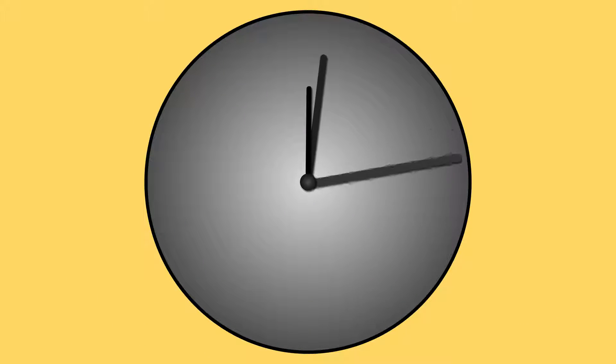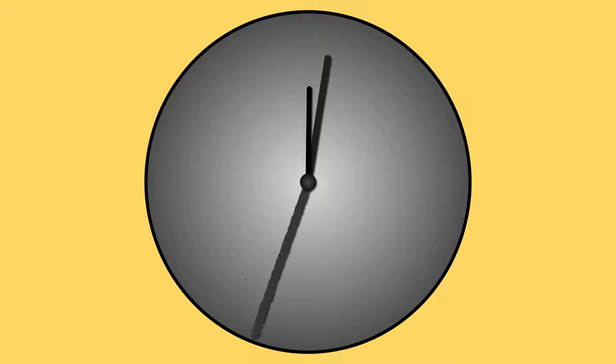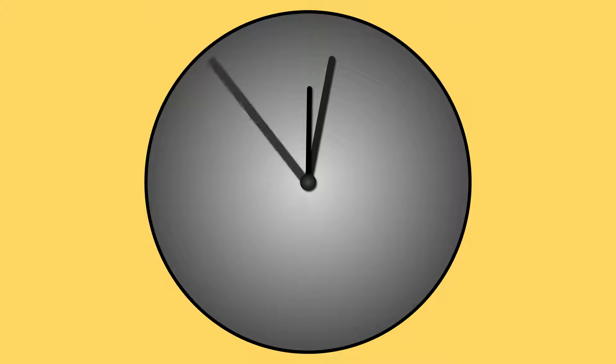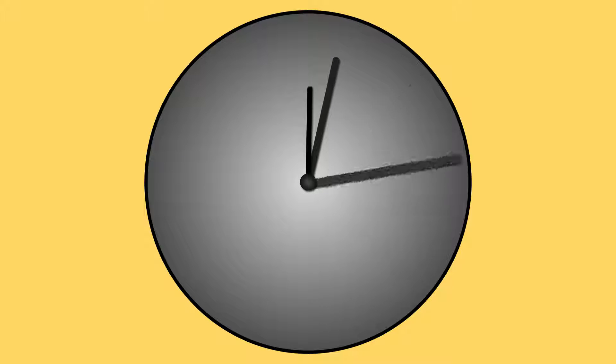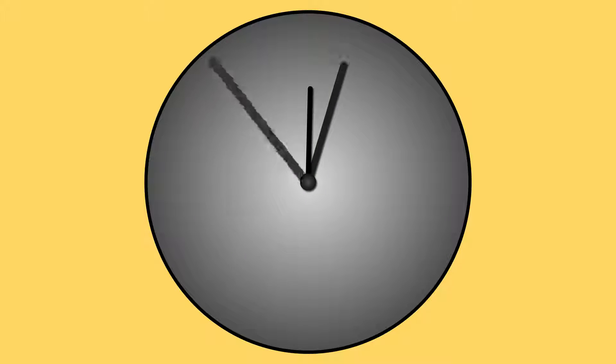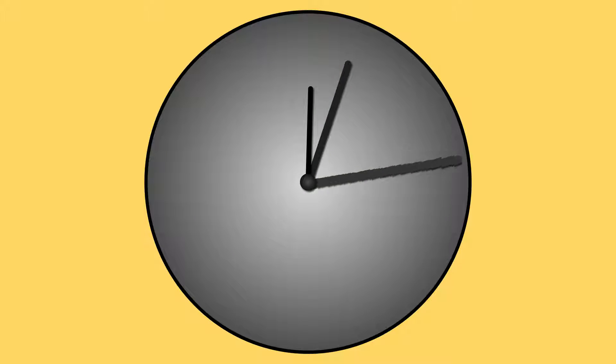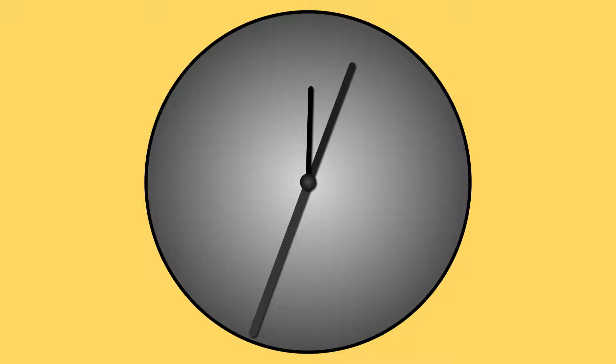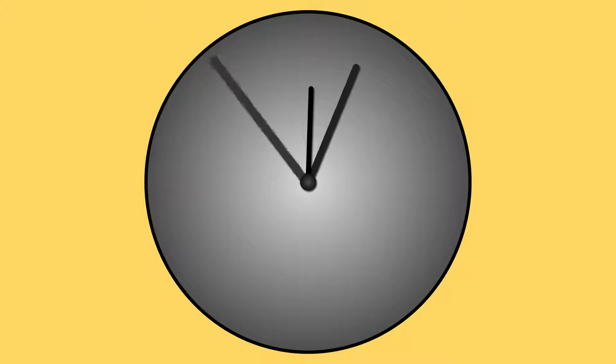Today we are going to be making a fully functional analog clock in After Effects. This clock will have an hour, minute, and second hand that you will be able to speed up to your liking.